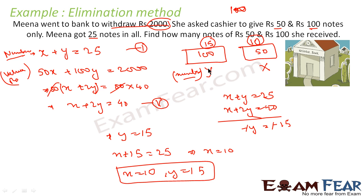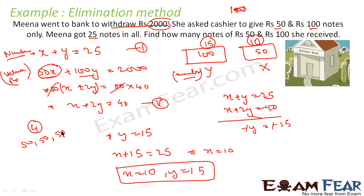We assumed number of 500 rupee notes as x and number of 100 rupee notes as y. Since total notes equal 25, x plus y equals 25. For the value equation: 50 into x gives the total sum if you have x 50-rupee notes — for example, 4 notes of 50 rupees equals 200 rupees, which is also 50 times 4. Similarly, 100 times y gives total value for y notes. So 50x plus 100y equals 2000 gives x equals 10 and y equals 15.